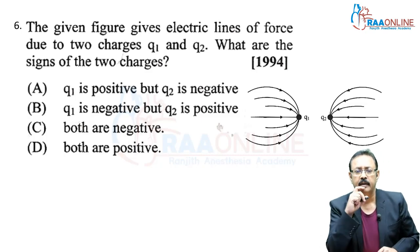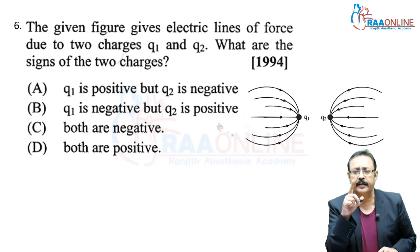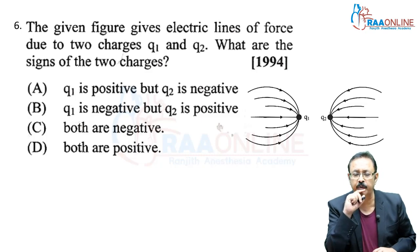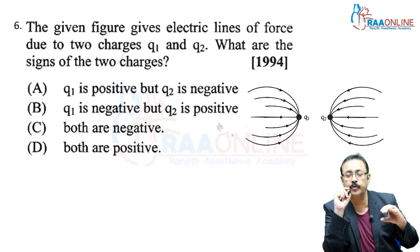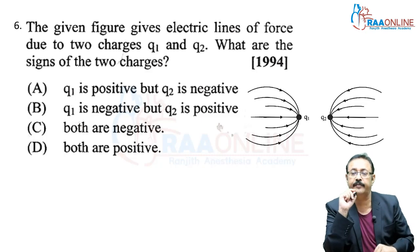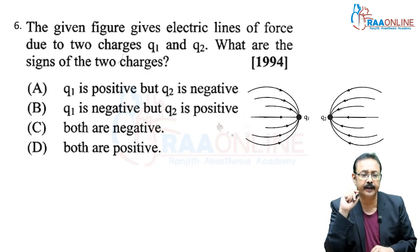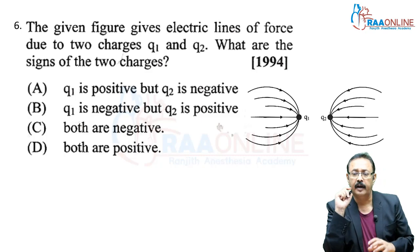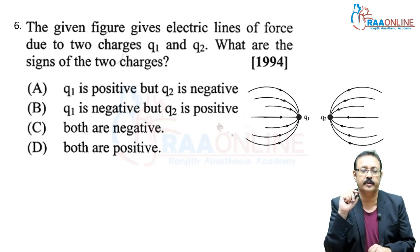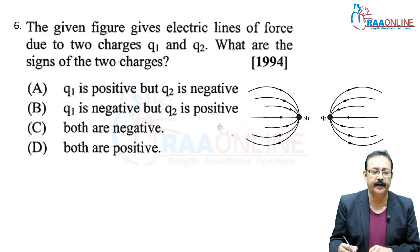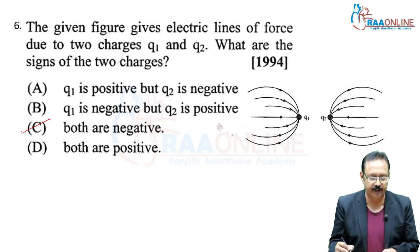Next: the given figure shows electric lines of force due to two charges Q1 and Q2. Lines of force are directed toward Q1, so Q1 should be negative. Lines of force are also directed toward Q2, so Q2 should be negative. Both charges are negative, so we go with option C.